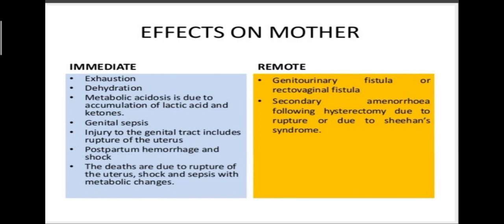Postpartum haemorrhage may be due to the isolated or combined effect of an atonic uterus or genital tract trauma. All of this leads to increased maternal morbidity and mortality. Remote complications include genitourinary fistula or rectovaginal fistula, variable degrees of vaginal atresia, and secondary amenorrhoea following hysterectomy due to rupture or due to Sheehan's syndrome.